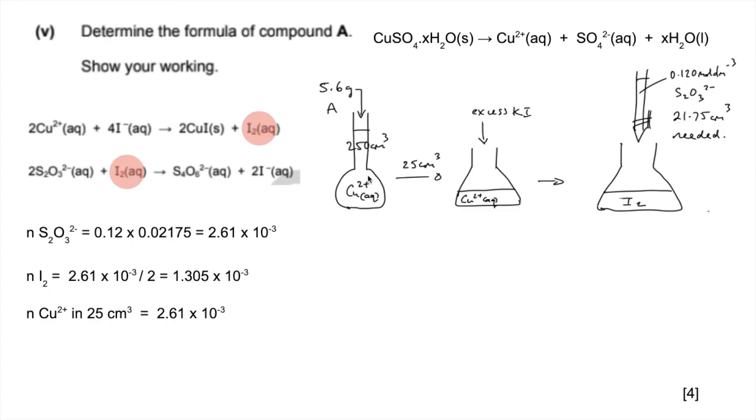We want to know how many moles of Cu²⁺ were in there, so we multiply by 10 because that's 250 compared to 25. So it's 2.61×10⁻². That means the moles of CuSO₄·xH₂O must also be that. Now we know the moles and the mass, we can work out its Mr, which comes out at 214.6.